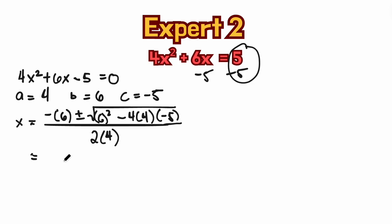Now, so we simplify this one. Negative times 6, that is negative 6. Plus or minus square root of 6 squared, that is going to be 36.